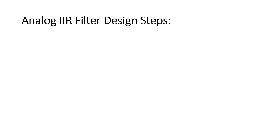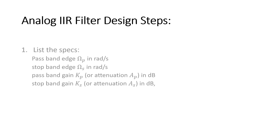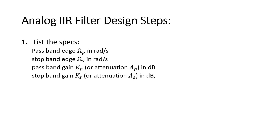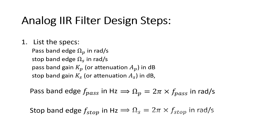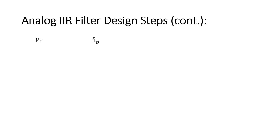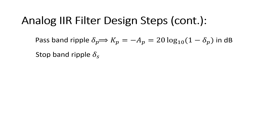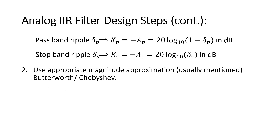Let's look at the general steps involved in the design of an analog IIR filter. The first step is to list out specifications — preferably the band-edge frequencies omega_p and omega_s expressed in radians per second, and the pass band and stop band gains or attenuations in dBs. If frequencies are in Hertz, convert to radians per second by multiplying with 2π. If tolerances are given as fractions delta_p and delta_s, convert them to dB. The second step is to choose the appropriate magnitude approximation.